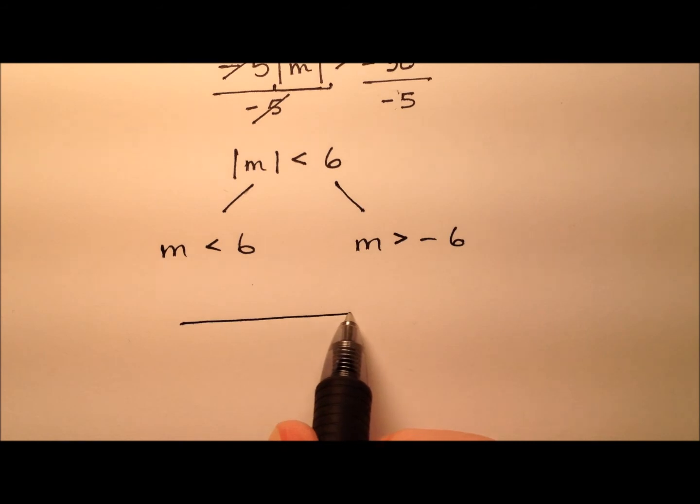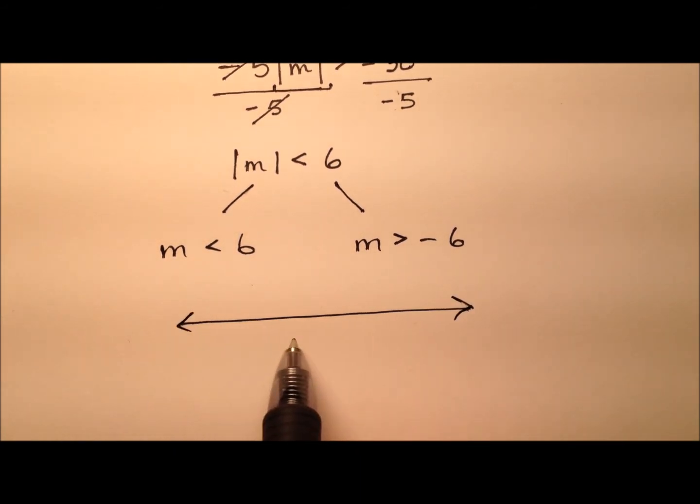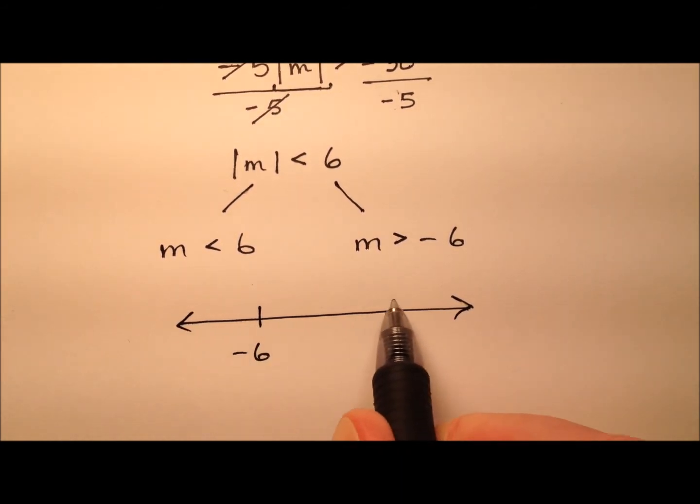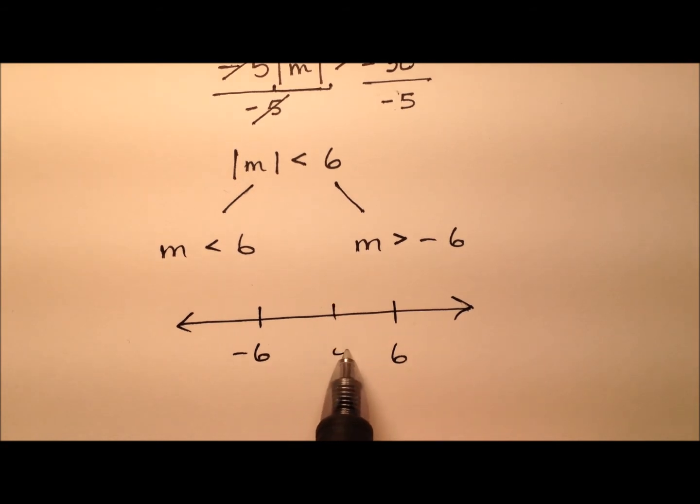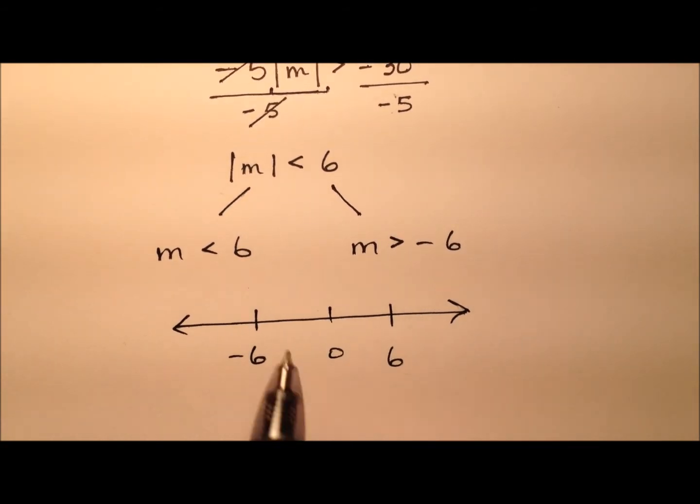So if I were to graph this, I have some numbers negative 6 and positive 6, and we can put 0 there in the middle for good measure. So they're both going to be open circles.